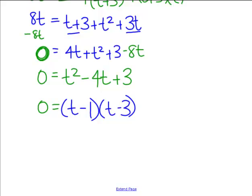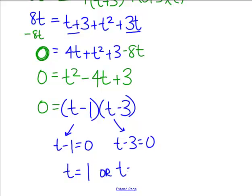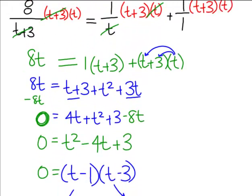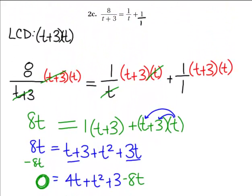So remember this is the zero product property. We have two numbers multiplied together and they equal zero. So that means we can set one number equal to zero and then the other number equal to zero and solve them both. So our possibilities are T could equal 1 or T could equal 3. We have two things that T can be and make this equation back up here true.